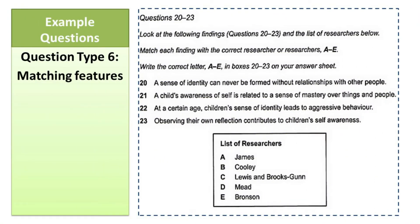Question type six is Matching Features. Here we have different names and different features. Your job is to decide which name is associated with certain features. There are mostly more names than features — again just to confuse you. For example, here we have five different names but only four features, so some researchers are extra.